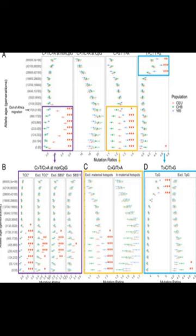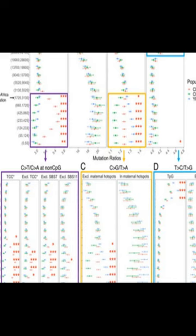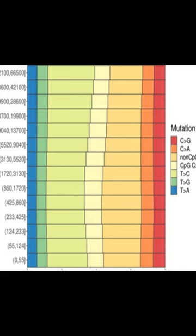Additionally, the study showed that the generation time could not fully account for the observed patterns of mutation types. Therefore, other factors such as genetic modifiers or environmental exposure must have played a role in shaping the human mutation landscape.